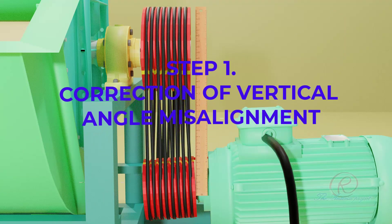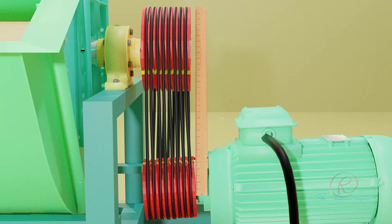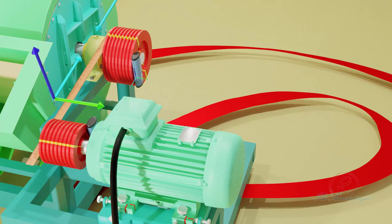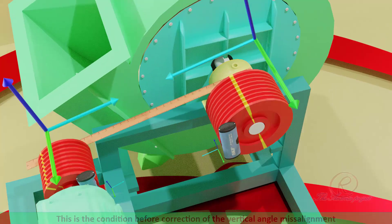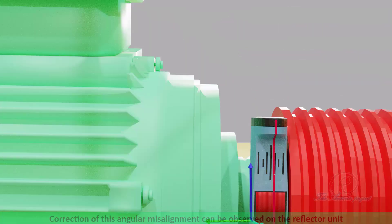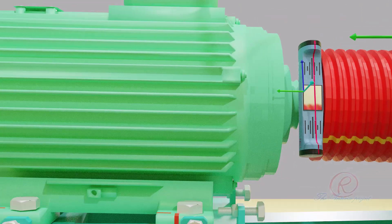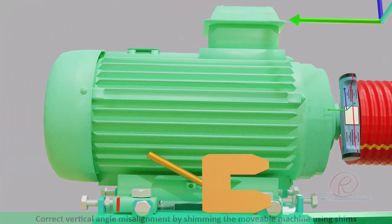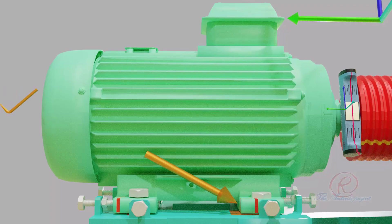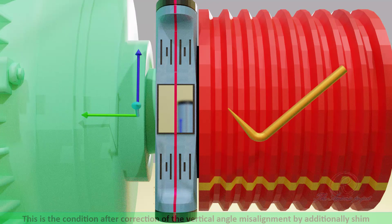Step One, correction of vertical angle misalignment. This is the condition before correction of the vertical angle misalignment. Correction of this angular misalignment can be observed on the reflector unit. Correct vertical angle misalignment by shimming the moveable machine using shim. This is the condition after correction of the vertical angle misalignment by adding shim.